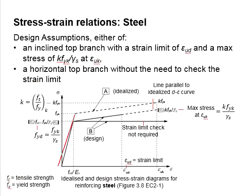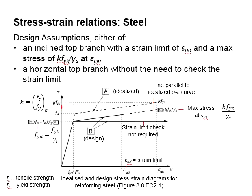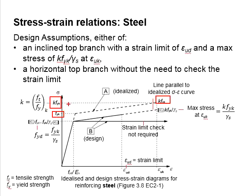The line indicated by symbol A is the idealized response of the steel. The characteristic yield strength and ultimate strength are identified on this curve. The ultimate strength is expressed as a factor k in terms of the characteristic yield strength, where k is the ratio of the characteristic tensile strength divided by the characteristic yield strength.